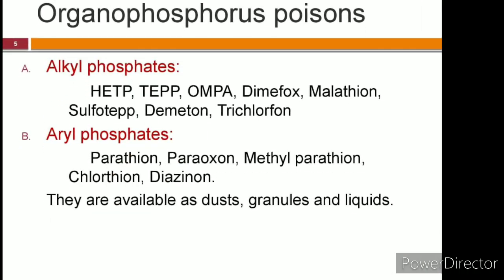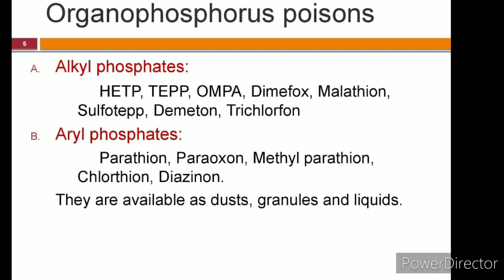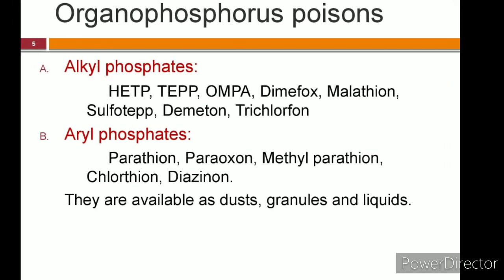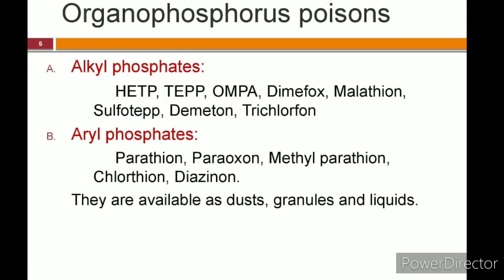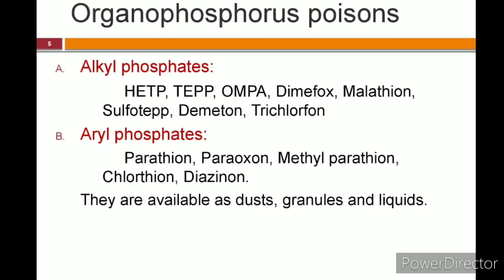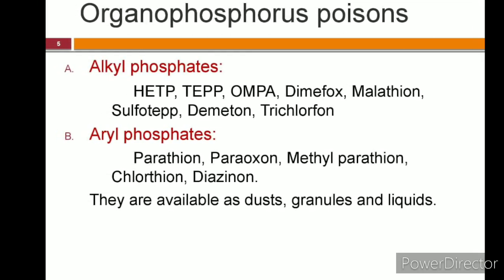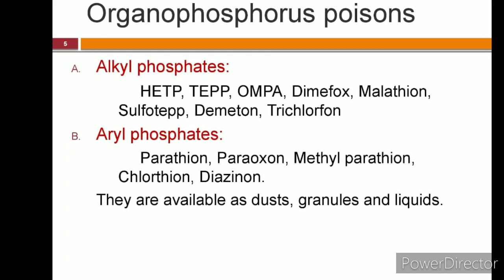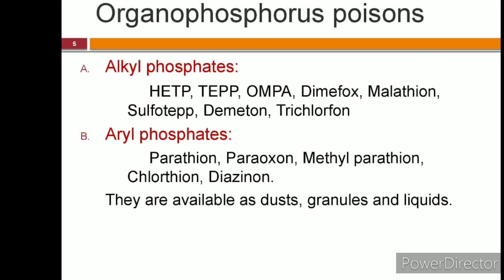Now coming to the commonest agricultural poison: organophosphorus poisoning. They are further divided into alkyl and aryl phosphates. The alkyl phosphates include HETP, TAPP, OMPA, malathion, demeton, and trichlorophon. The aryl phosphates include parathion, paraoxone, methylparathion, chlorathion, and diacinon. They are available as dust, granules, and liquids.